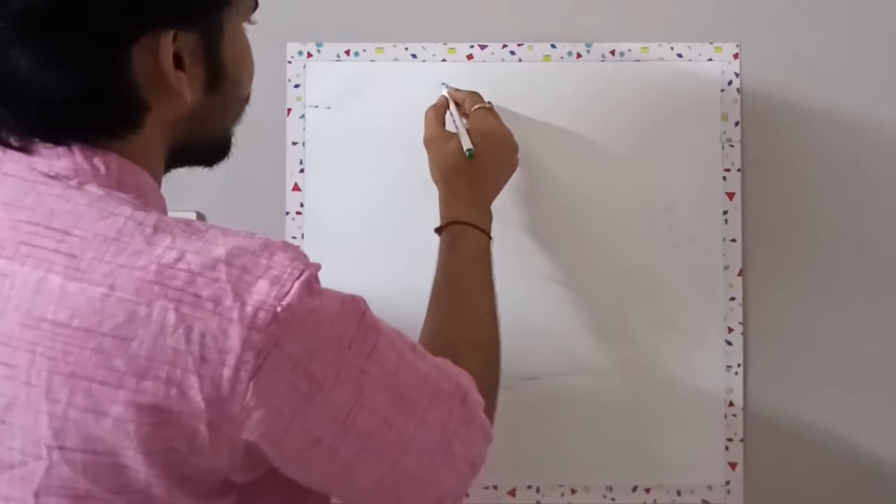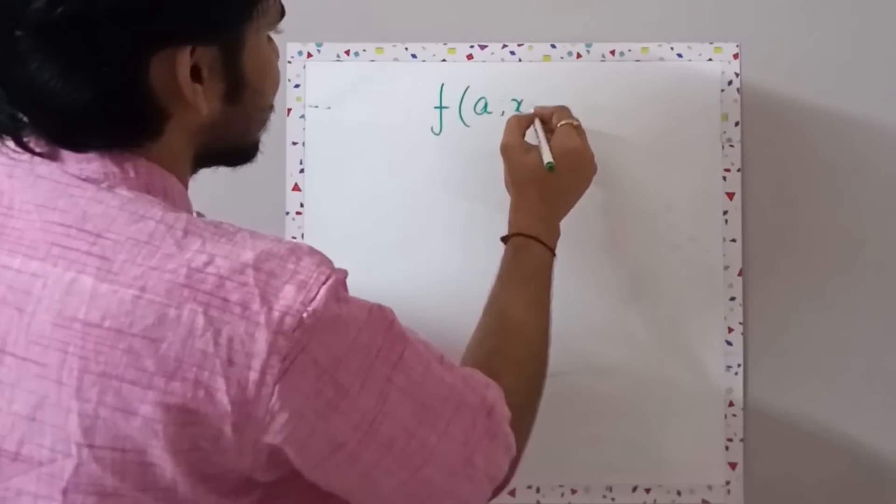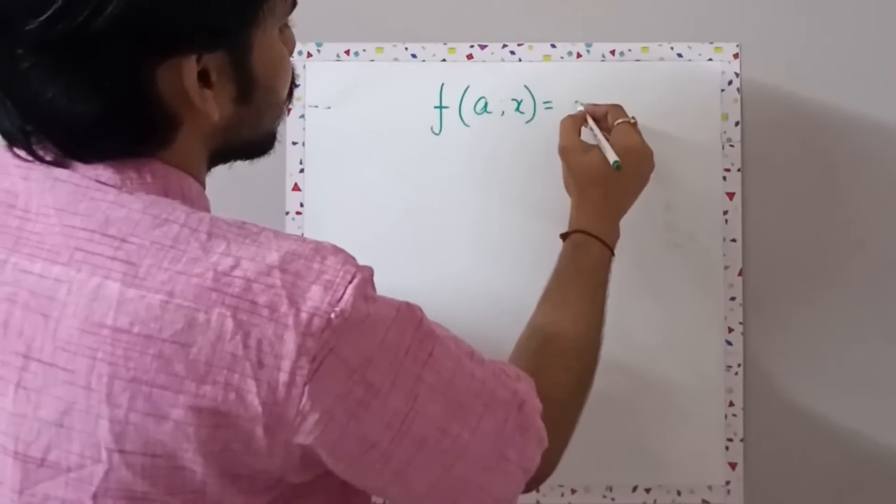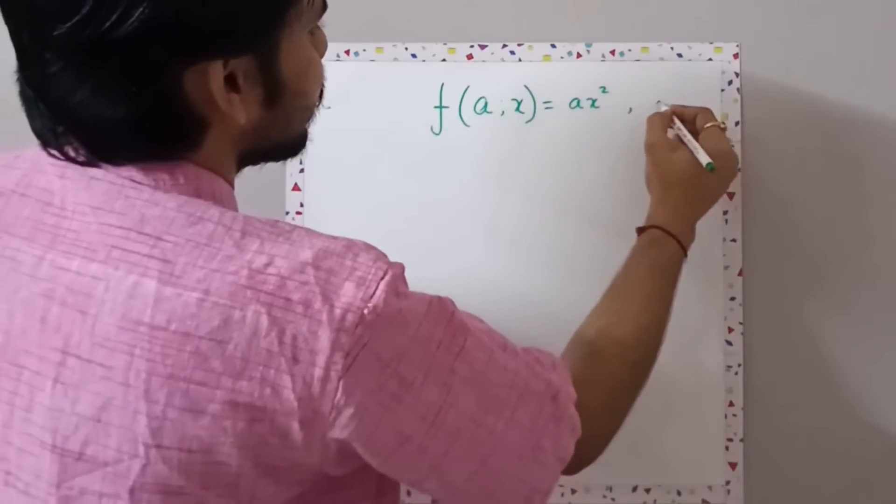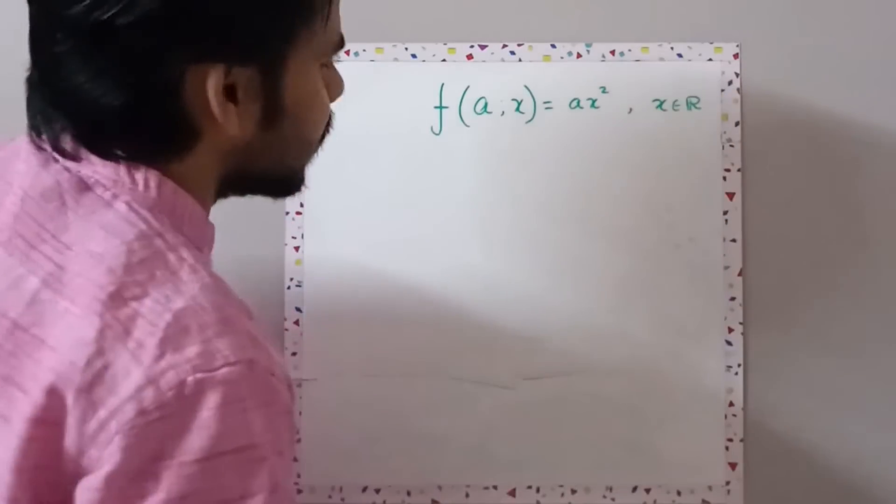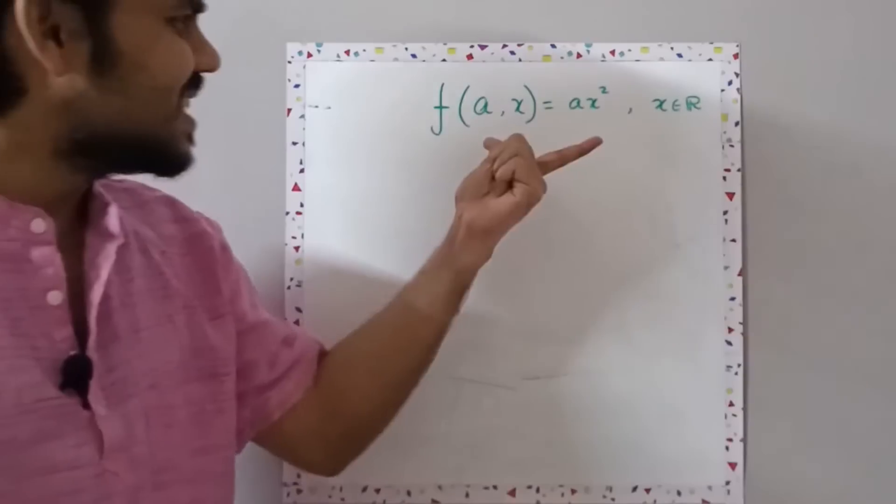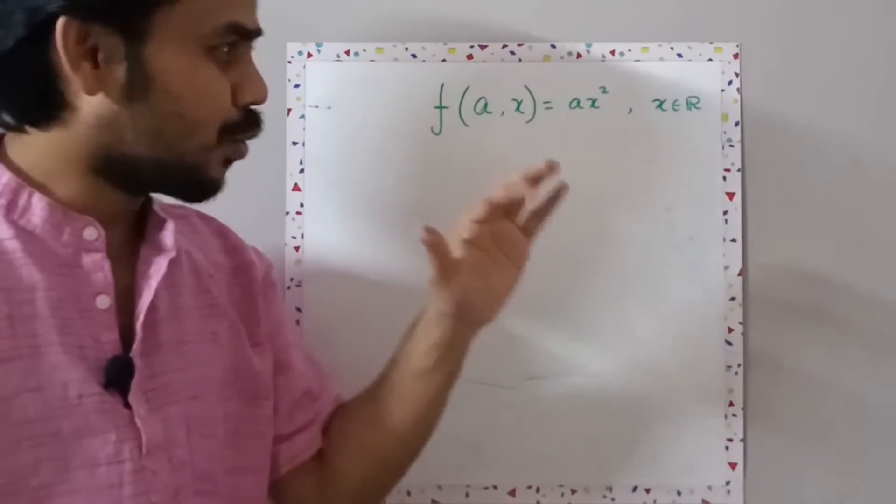So let's understand the difference between variables and parameters as far as mathematical economics is concerned, and then we'll discuss how the difference plays out in the study of mathematical economics. When I say that you have a function f(a,x) which is equal to ax² defined in the interval of real numbers...